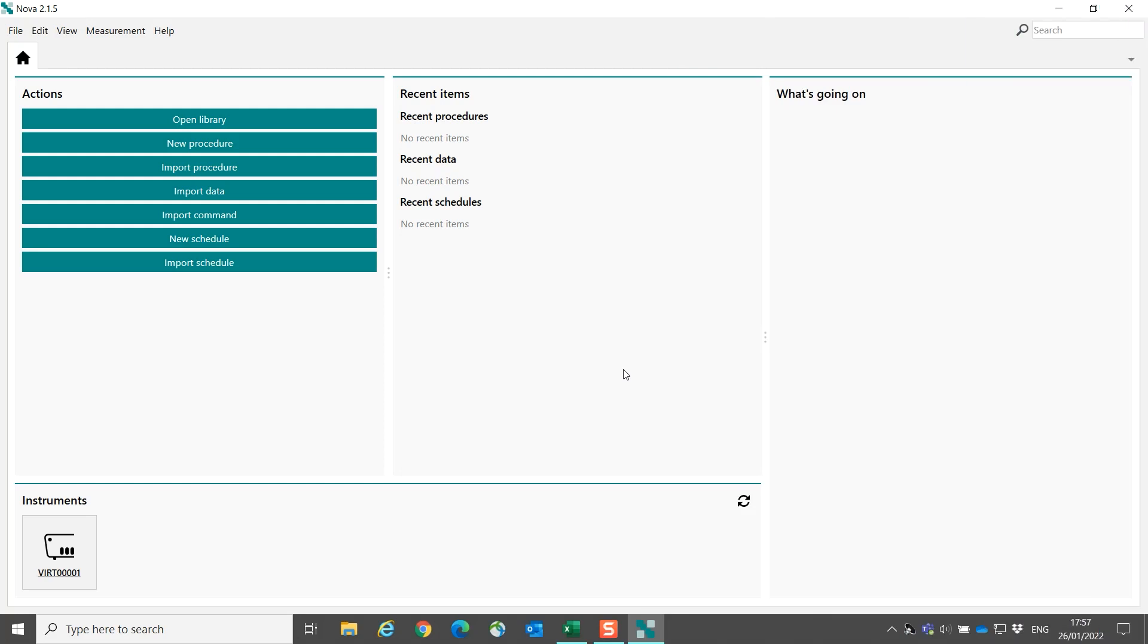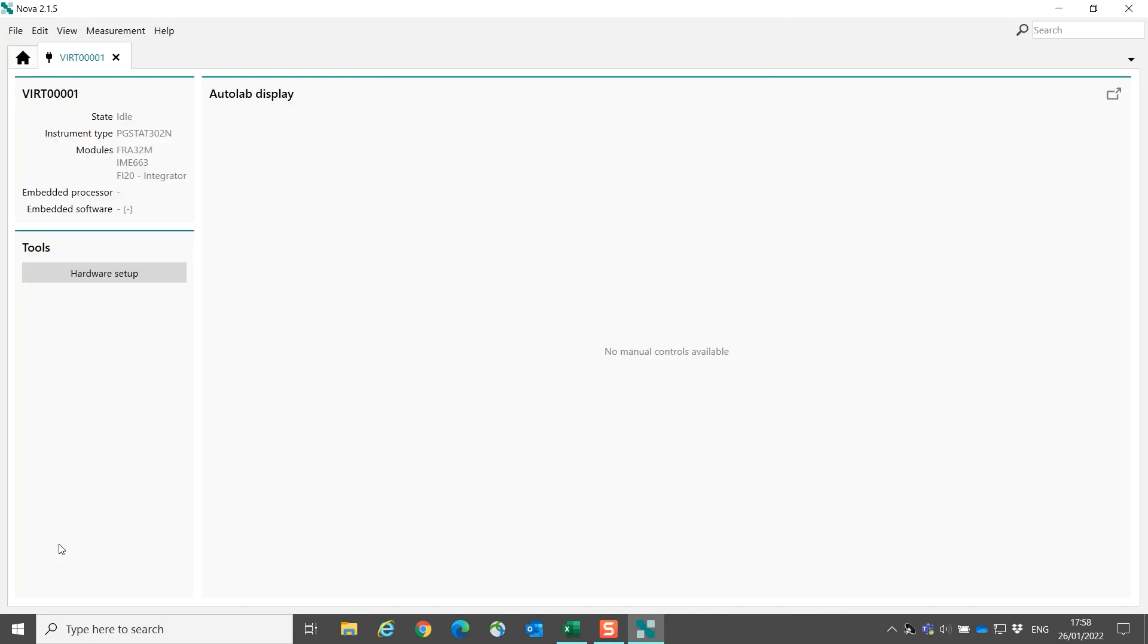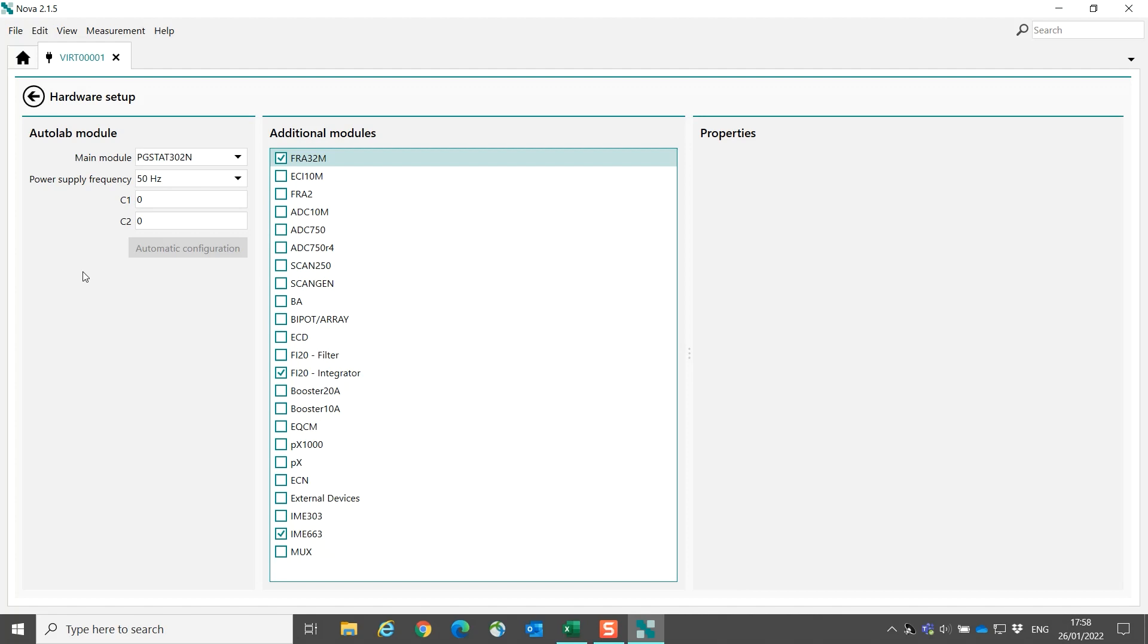To configure the rotating disk electrode in the NOVA software, we have to enable it in the hardware settings. First, we open the NOVA 2.1 software. When the software is open, you go to your instruments, and it depends what kind of instrument you have. In our example, we use the PG-Stat 204. So we go to the hardware setup and select PG-Stat 204.